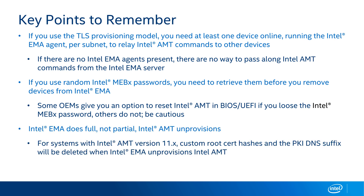Next, Intel EMMA does what we call a full unprovision, not a partial unprovision, of Intel AMT. This means that if you're running AMT version 11 systems in your environment and have added things like custom root suite hashes or PKI DNS suffix, those entries from the MEBX will be removed when Intel EMMA performs the unprovision, requiring you to go back in and re-add those entries. This does not happen on AMT 12 and above — this capability is limited to AMT 11.